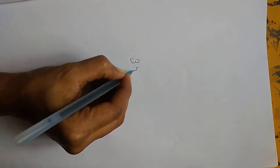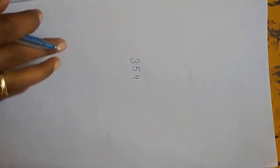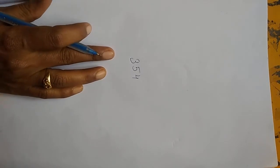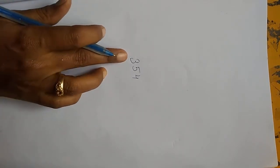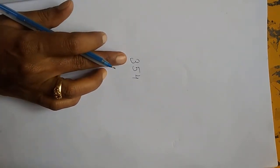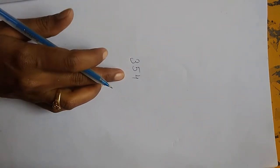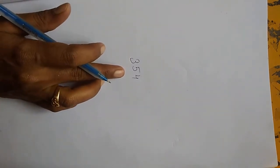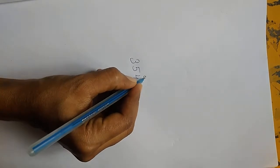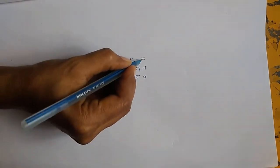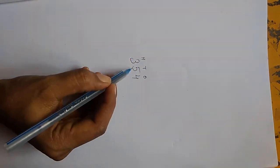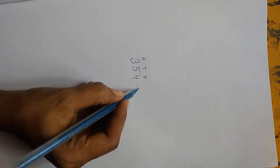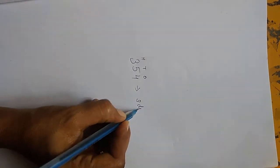See the note, children. I write one number — you read it. What is this number, children? This is 354. How many digits are here? Three digits. So this is a 3-digit number.